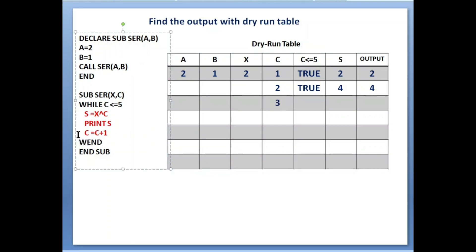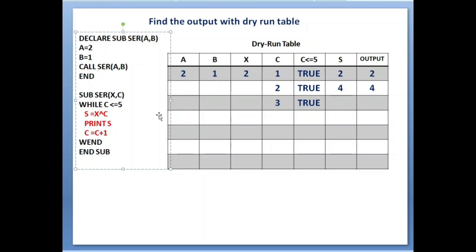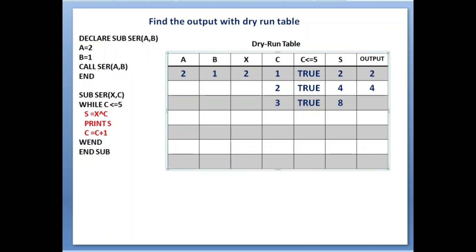'Wend' means while loop end, but before it ends it checks the condition again. c less than or equals to 5: value of c is 3, and 3 less than 5 — condition is true. So s equals to x exponential c: value of x is 2 (unchanged), value of c is 3, so 2 to the power of 3 equals 8. Print s — value of s is 8, so output is 8.